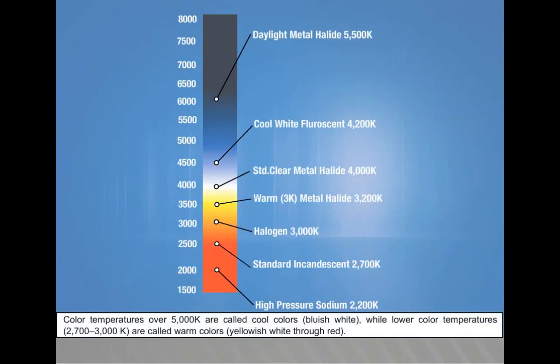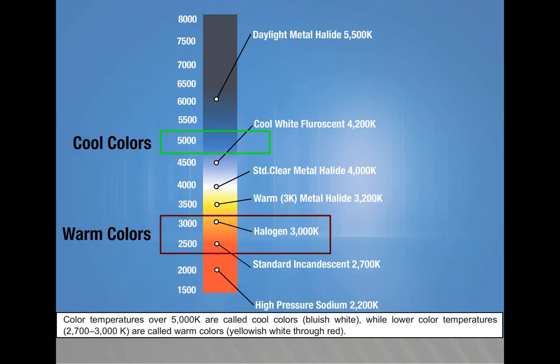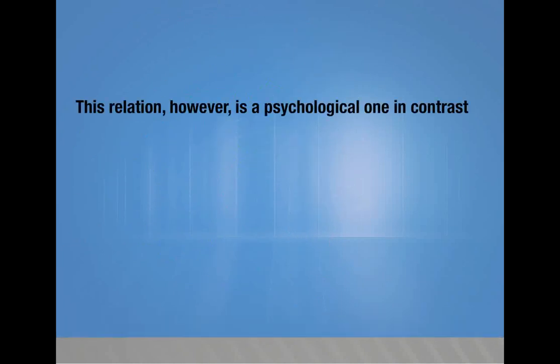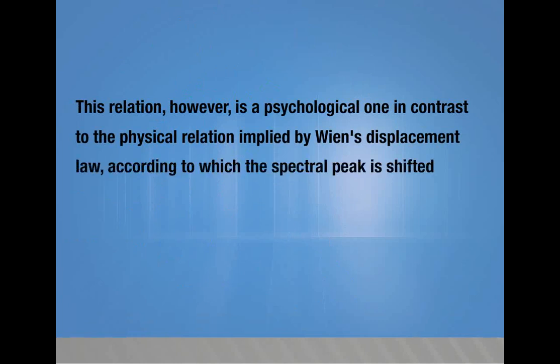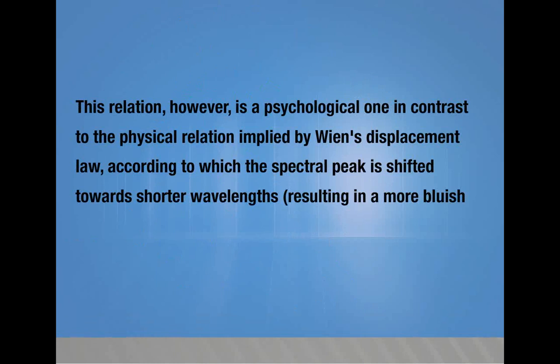Color temperatures over 5000 Kelvin are called cool colors, bluish white, while lower color temperatures (2700 to 3000 Kelvin) are called warm colors, i.e. yellowish white through red. This relation, however, is a psychological one, in contrast to the physical relation implied by Wien's displacement law, according to which the spectral peak is shifted towards shorter wavelengths, resulting in more bluish white for higher temperatures.